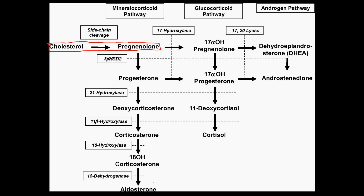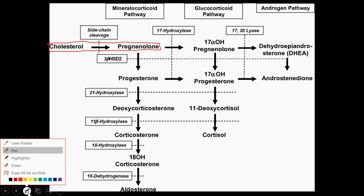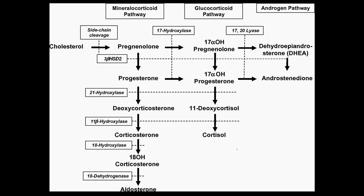Pregnenolone is going to be the secondary precursor for all the other hormones we're talking about. One hormone that activates desmolase is ACTH — adrenocorticotrophic hormone — because it wants to produce cortisol, so it needs to start the pathway by activating desmolase. Something that inhibits desmolase — not commonly talked about, but worth noting — is ketoconazole. So ketoconazole will inhibit desmolase.